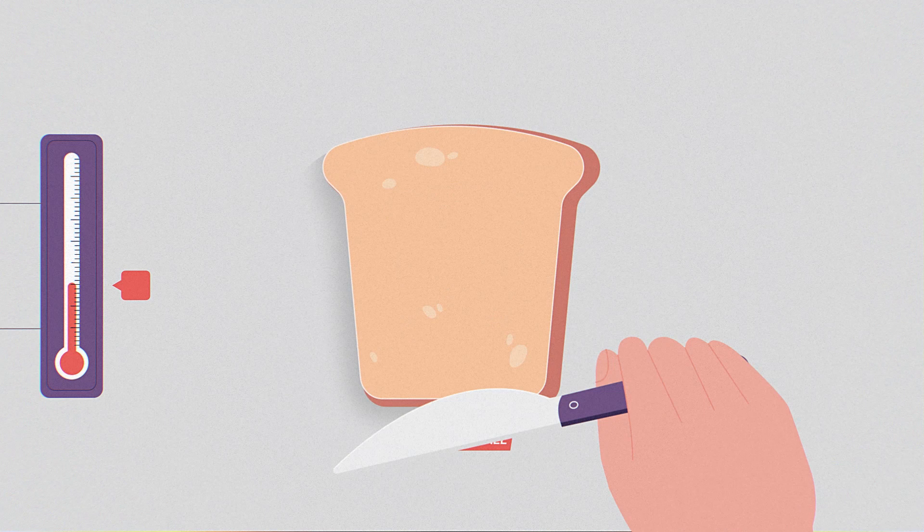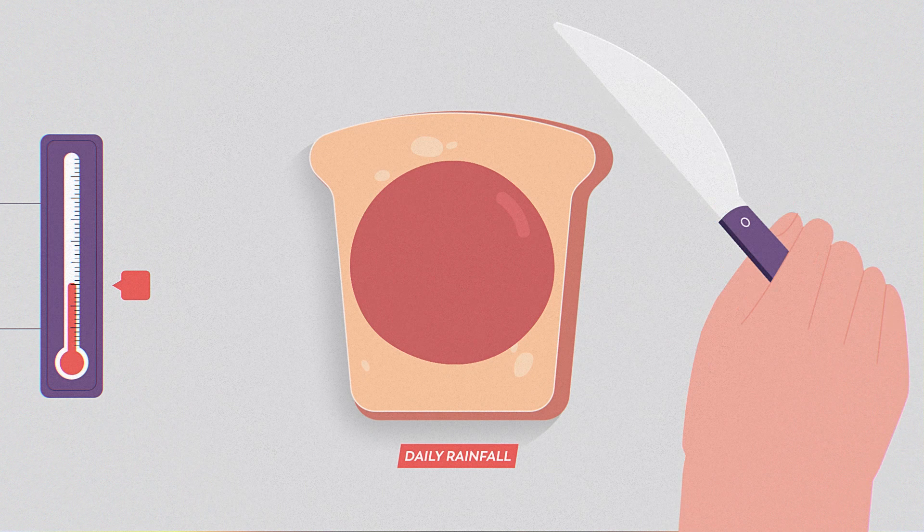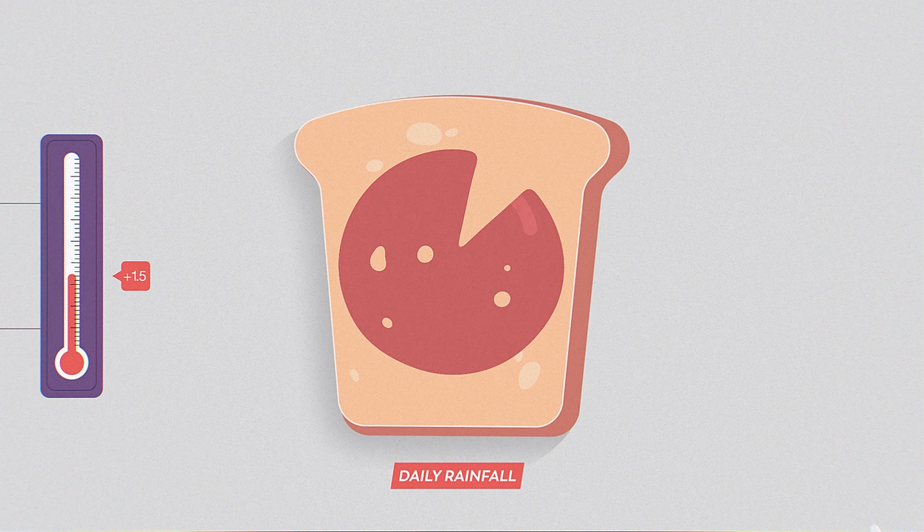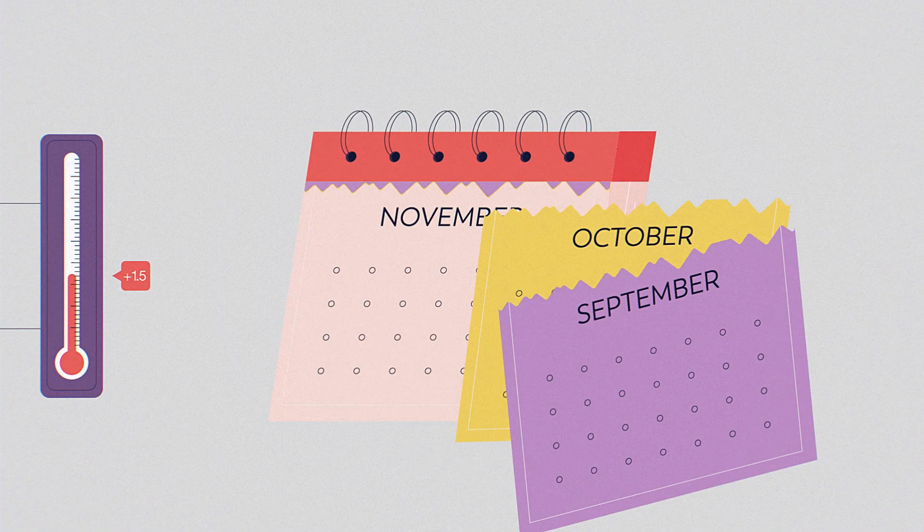Rainfall, like the layer of peanut butter on a PB&J, is best when it's evenly distributed. The frequency of extreme rainfall events at 1.5 degrees Celsius is expected to increase by 17 percent.